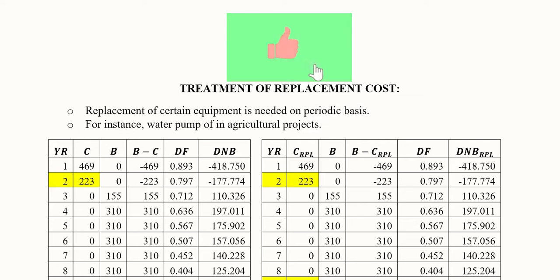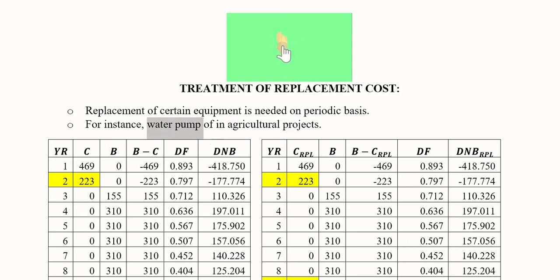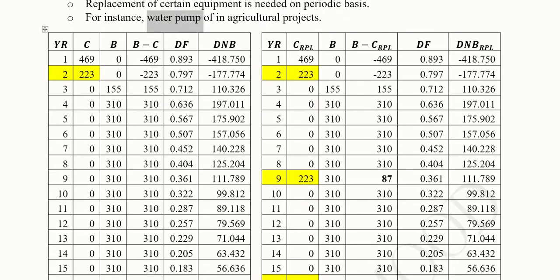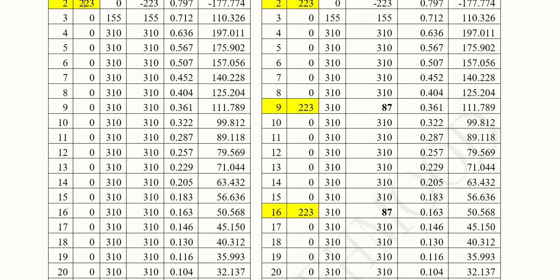We can take the example of an agricultural project where a water pump is to be replaced. We know it cannot last for decades, so it has to be replaced after some time. Here we have a stream of costs and benefits. On the left-hand side, we can see the possibility of a one-time installation of that machine — the water pump — while the other possibility shows the water pump being installed again after approximately seven years.